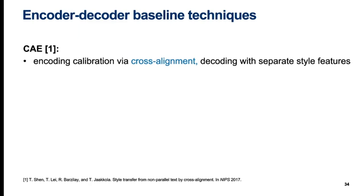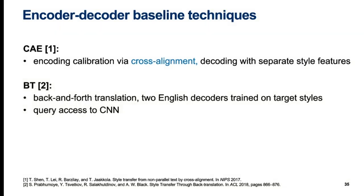The cross-aligned autoencoder, or CAE, baseline is an autoencoder that uses a technique called cross-alignment for enforcing that the encodings coming from different source styles are aligned in the latent space. It then decodes text in the target style from this latent encoding. Back translation, or BT, is similar to CAE except instead of cross-alignment it uses back-and-forth machine translation for attempting to align the encodings from two target styles. For determining the style, it queries a CNN classifier that we also used as an author profiler in our experiments.